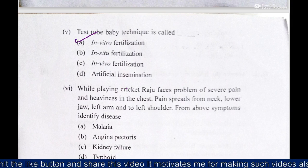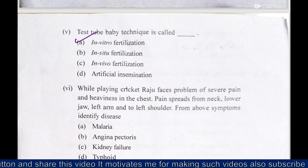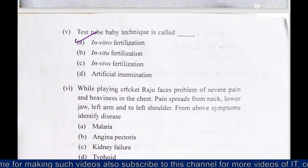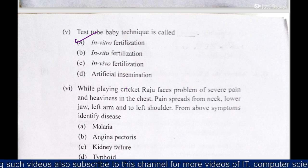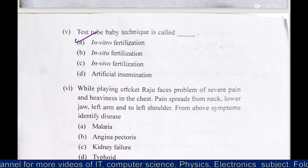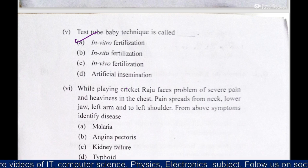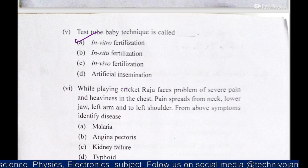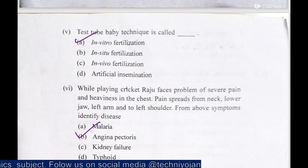The sixth MCQ: while playing cricket, Raju faces severe pain and heaviness in the chest, pain spreading from the neck, lower jaw, left arm, and to left shoulder. From these symptoms, identify the disease. The answer is angina pectoris.